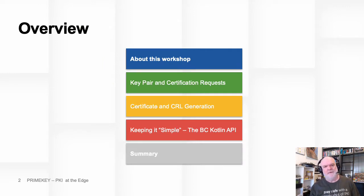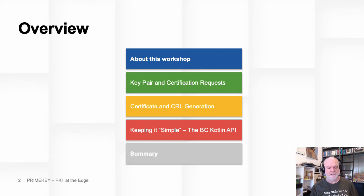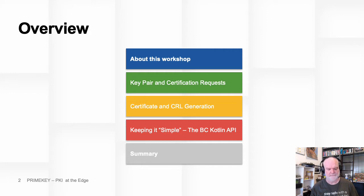We're looking at three sessions. The first covers the basics of key pair generation and certification requests. The second covers certificate and CRL generation. The third, which we've called 'Keeping it Simple,' looks at the use of Kotlin DSL — a domain specific language — using the BC Kotlin API to write scripts for performing most of the Java tasks covered in the first two sessions. The third section will also look at private key storage.